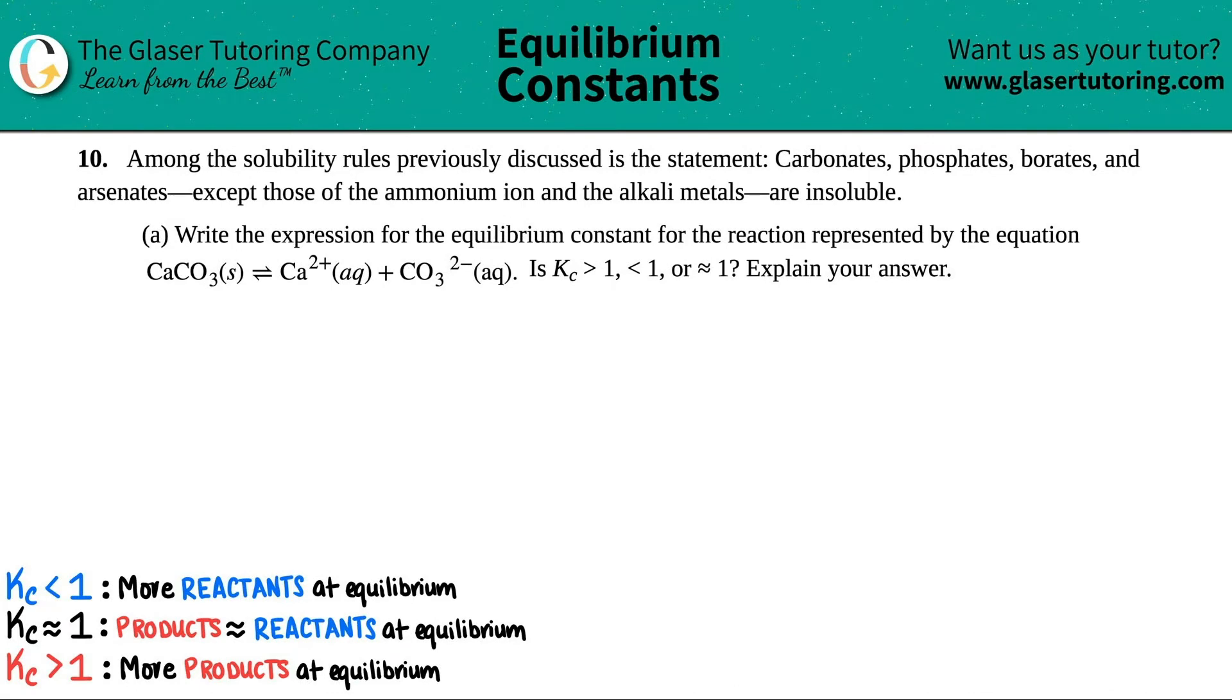Number 10. Among the solubility rules previously discussed is the statement carbonates, phosphates, borates, and arsenates, except those of the ammonium ion and the alkali metals, are insoluble.